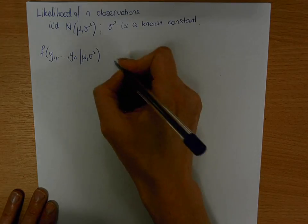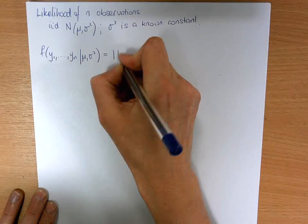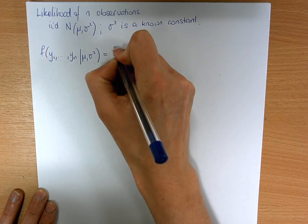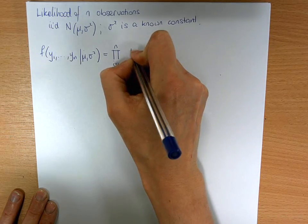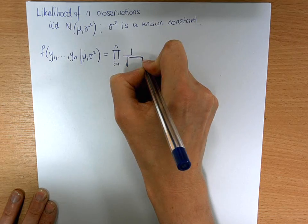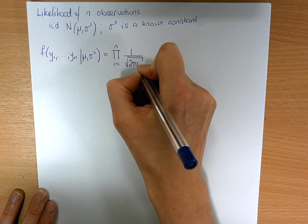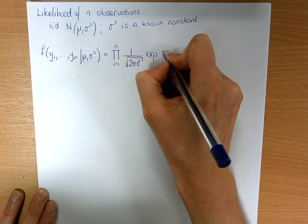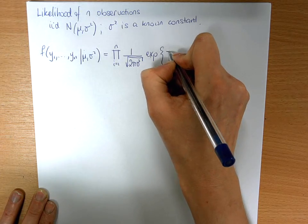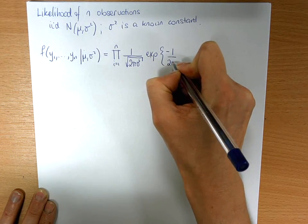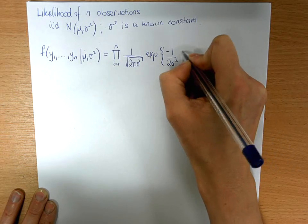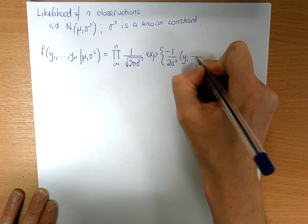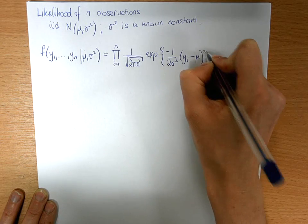That means you can product them. So the product of i equals 1 up to n of 1 over the square root of 2 pi sigma squared times the exponential of minus 1 over 2 sigma squared into yi minus mu squared.